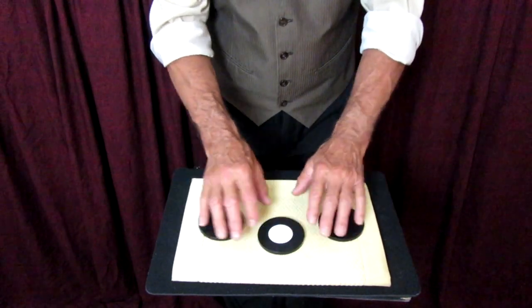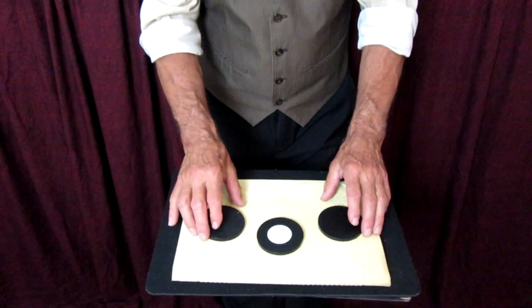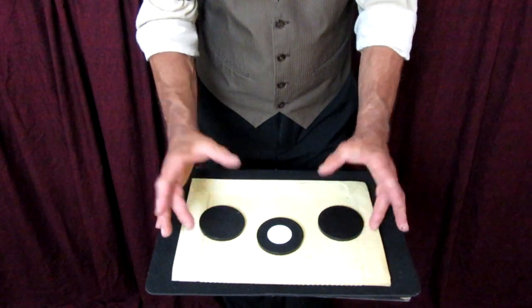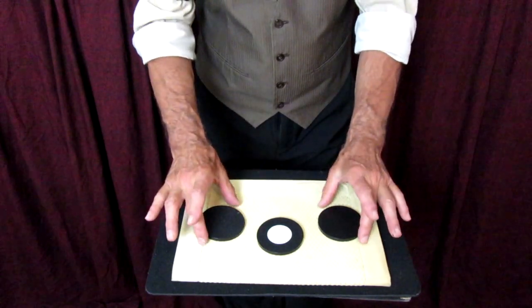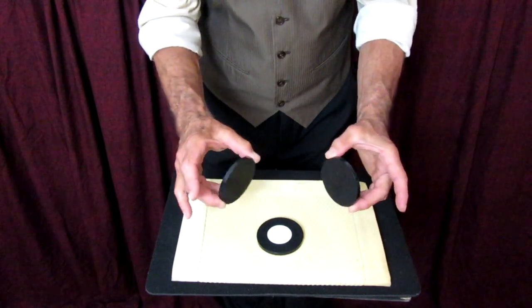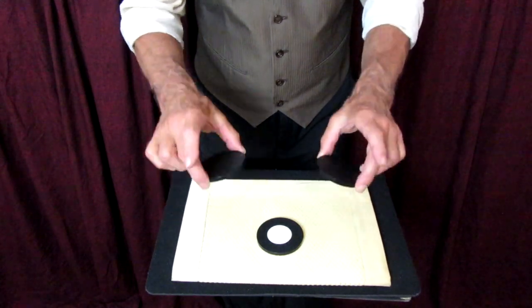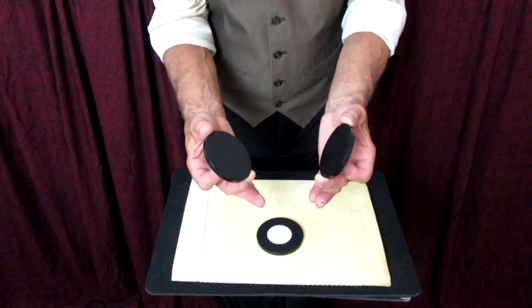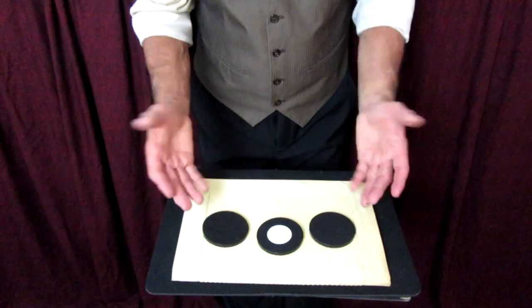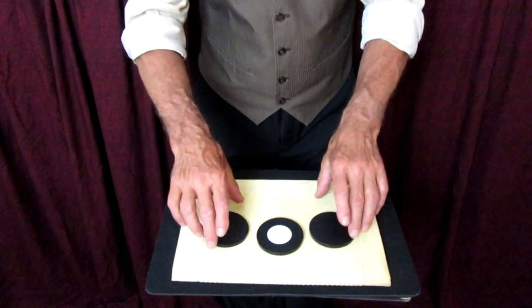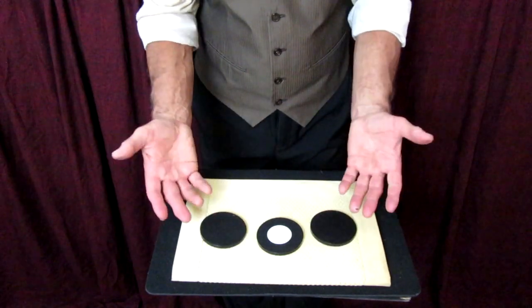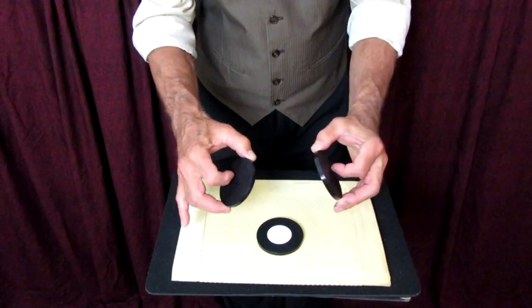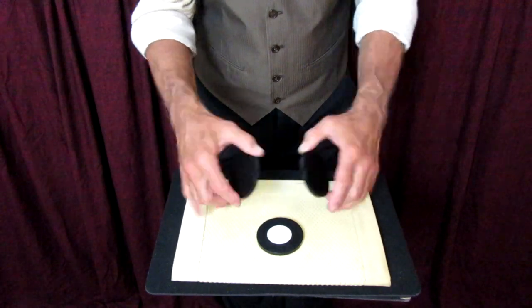So here is the whole move in more detail. I start off by picking up the 2 outside losing discs with my middle finger and my thumb. I lift them up and then I use the ring finger to start them revolving around. So I pick them up, start the revolution with the ring finger and continue the revolution with the first finger while rotating and displaying the disc.